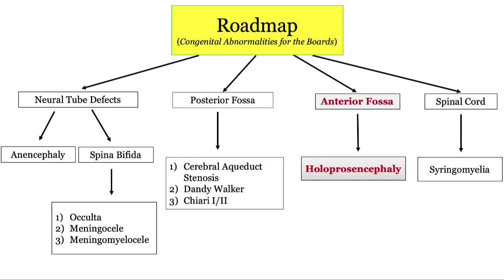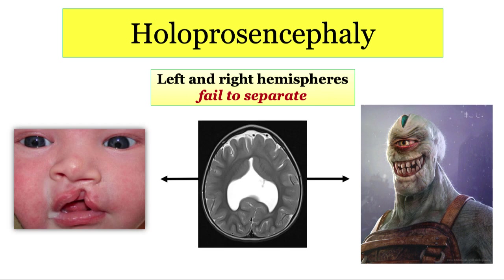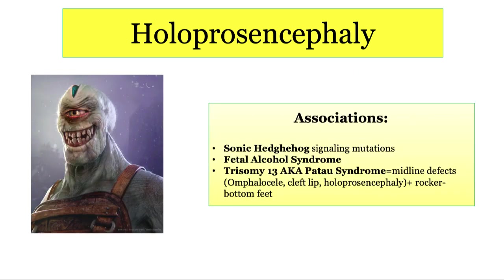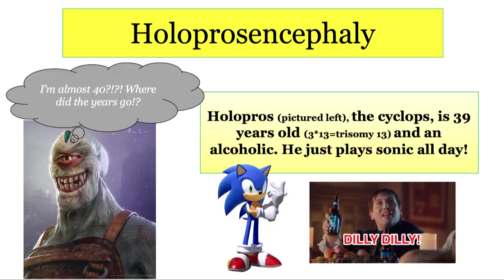Let's move on to holoprosencephaly, a particularly confusing disorder. The bottom line is that the left and right hemispheres of the brain fail to separate. This spectrum can present with something as mild as a cleft lip or cleft palate, or as severe as a full-on cyclops baby. Key associations include a mutation in the sonic hedgehog signaling pathway, fetal alcohol syndrome, and trisomy 13 (Patau syndrome). Patau syndrome is characterized by midline defects like omphalocele, cleft lip, and holoprosencephaly. On MRI, you will see one single ventricle. A mnemonic: Holopros the Cyclops is 39 years old, an alcoholic who just plays Sonic all day long.